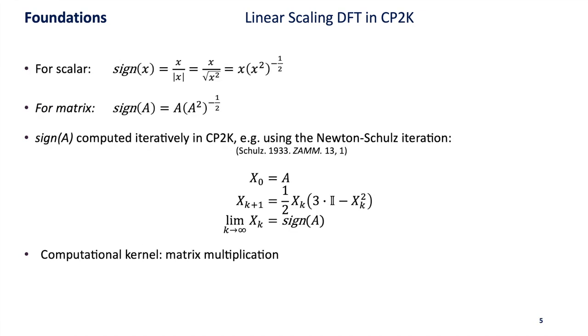So what is this sign function? If we think about the sign function for a scalar value, we can denote it as x divided by the absolute value of x so that we get either plus one or minus one depending on whether the value was positive or negative.